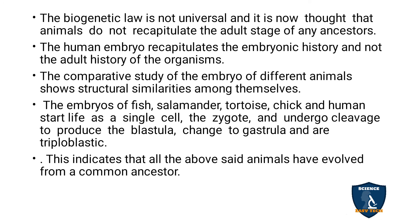From fish, salamander, chick, and human beings, all start their life from a single cell. The single cell forms the zygote, the zygote forms the blastula, and the blastula's next stage is the gastrula stage with three layers — triploblastic. This indicates that all these animals have evolved from a common ancestor because their development is the same.